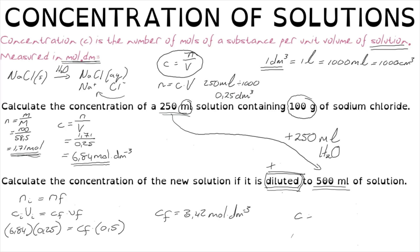Using the formula concentration equals number of moles over volume, we can always calculate the number of moles when we know concentration and volume, or calculate concentration when we know moles and volume, or calculate the volume required when we know the number of moles and the concentration.